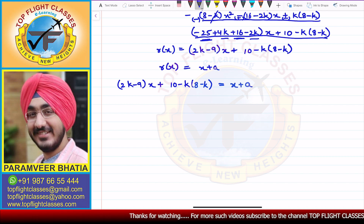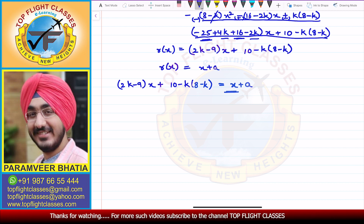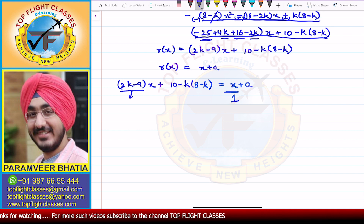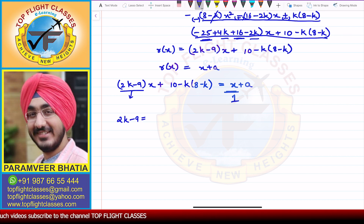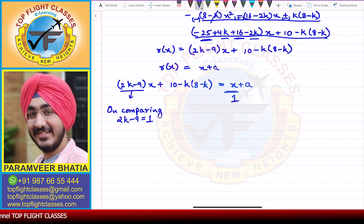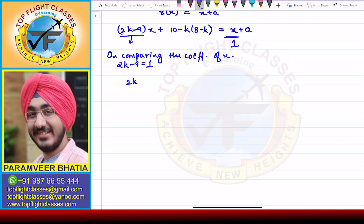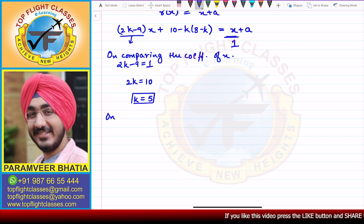Comparing the coefficients of x: the coefficient of x on the right side is 1, and on the left side it is (2k minus 9). So 2k minus 9 = 1, which gives 2k = 10, and therefore k = 5.